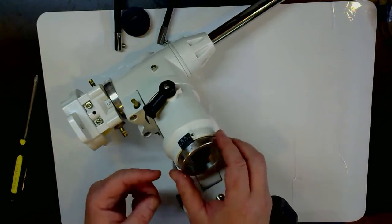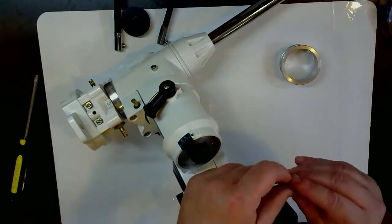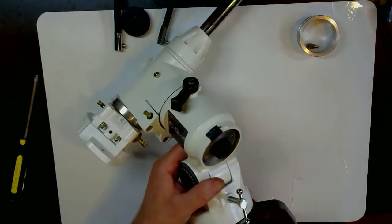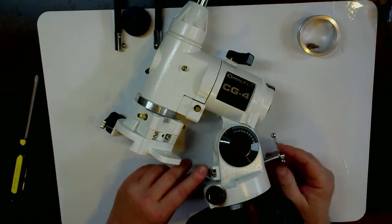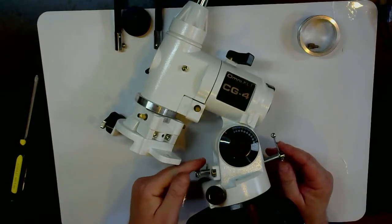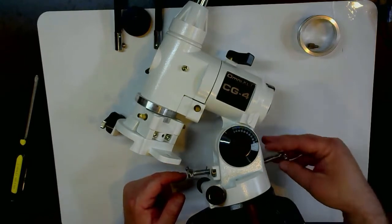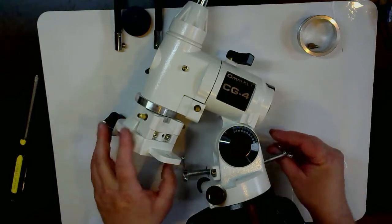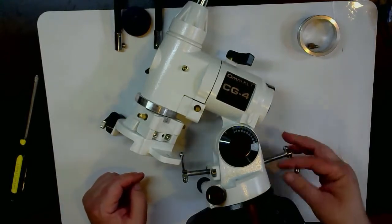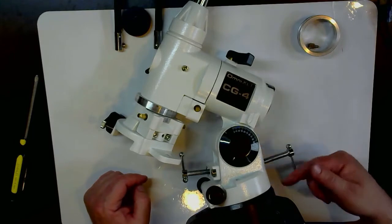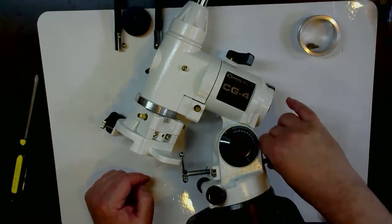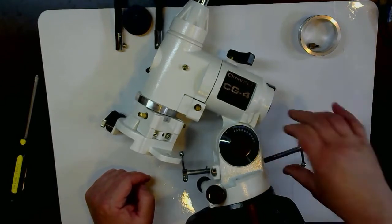I'll put that off to the side there. Bring this back down here. These are the two altitude adjustment knobs and they just wind out. We can take those.